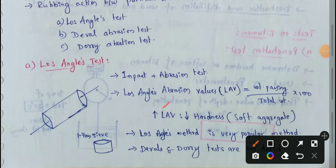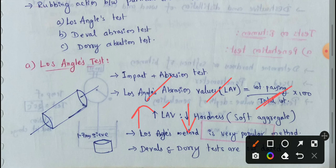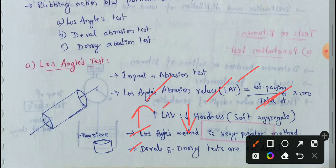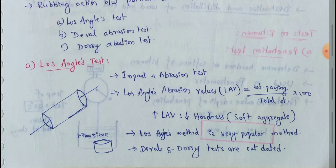As the Los Angeles abrasion value increases, the hardness value decreases, meaning the aggregate is soft. So a higher LAV means lower hardness. The Los Angeles method is the most popular; the Devil's and Dory tests are outdated and no longer used. If you like this video, please like and subscribe to my channel — thanks for watching!